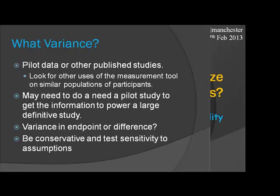The crucial bit in doing any power calculation is estimating the variance — the spread between the outcomes you're measuring between participants. You may have pilot data, and you would hope to have some pilot data, or other published studies using similar outcomes in similar populations. It can be quite difficult to find the actual numbers you need in the papers.